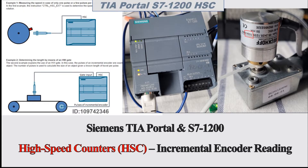Hello everyone, welcome back to this Siemens S7-1200 PLC high speed counter topic. In the previous video we discussed how to use the counter function block 'CTRL_HSC' and how to read the incremental encoder using the HSC resource number one. We set the channel as A and B and we read the counter.